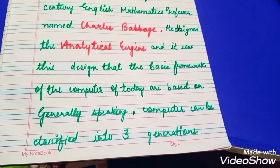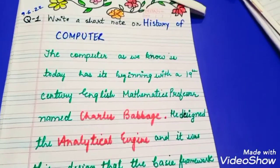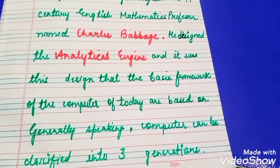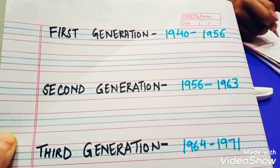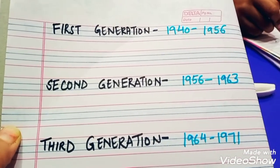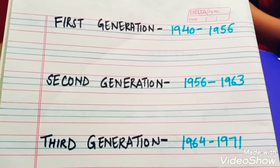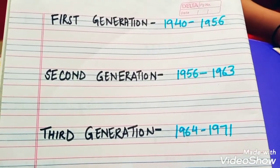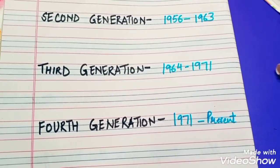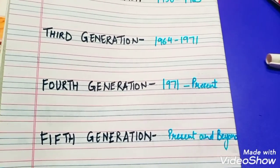Generally speaking, computers can be classified into three generations. First generation: 1940-1956. Second generation: 1956-1963. Third generation: 1964-1971. Fourth generation: 1971 to present. Fifth generation: present and beyond.